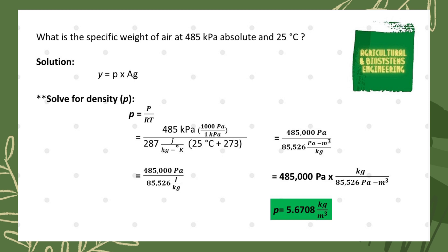Now we have 485 kilopascal multiplied by 1000 pascal per kilopascal, divided by the product of the gas constant 287 joules per kilogram per degree Kelvin, multiplied by the converted temperature of 25 degrees Celsius plus 273. Solving this gives us 485,000 pascal divided by 85,526 joules per kilogram.